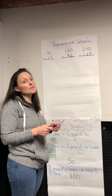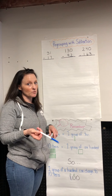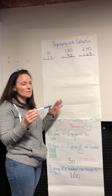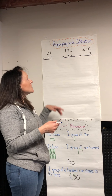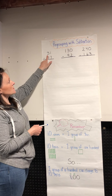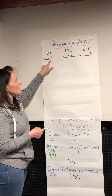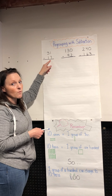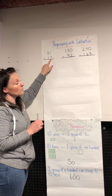Hi guys, today we're going to talk about subtraction with regrouping. First we're going to remind our brains a little bit about what we have been doing before. So let's have a look at the first question: it's 31 take away 17. We know we have to start in the ones column, so one take away seven.